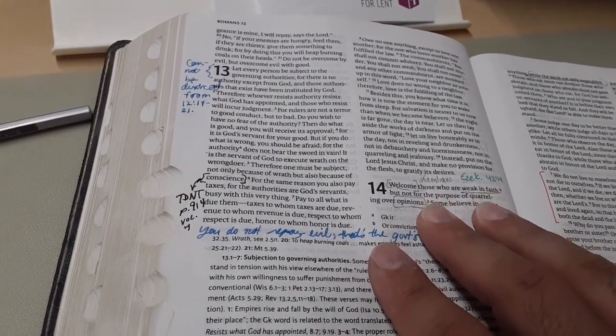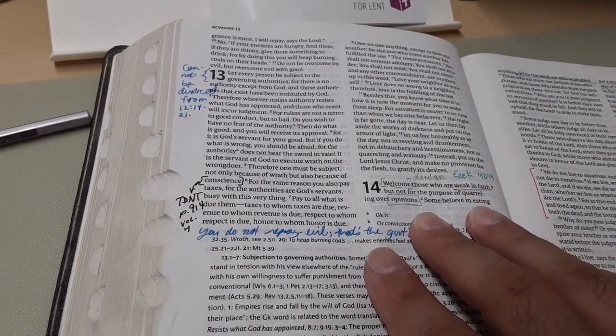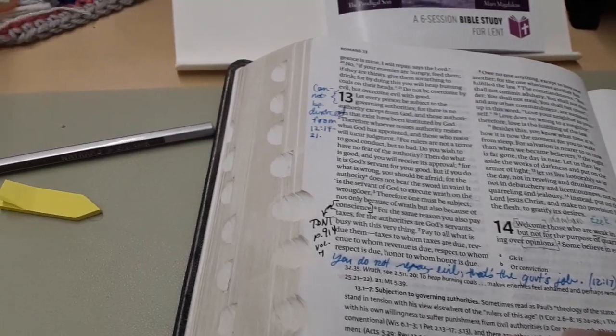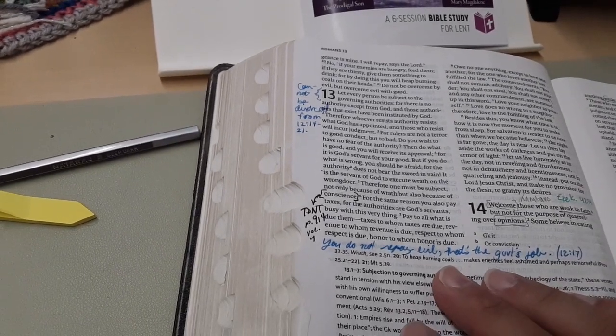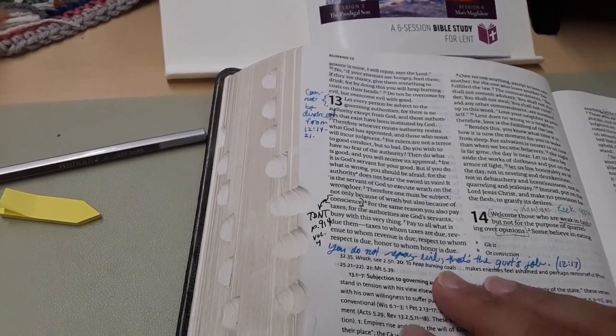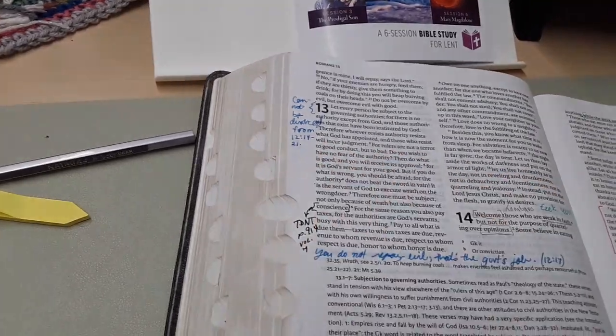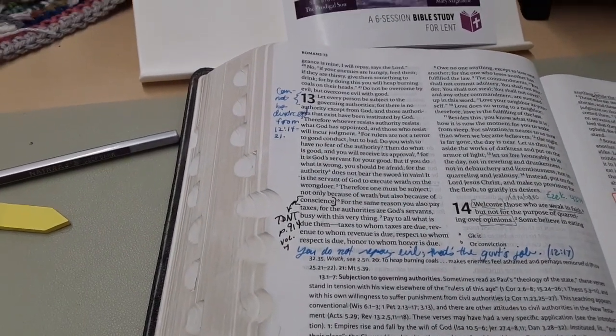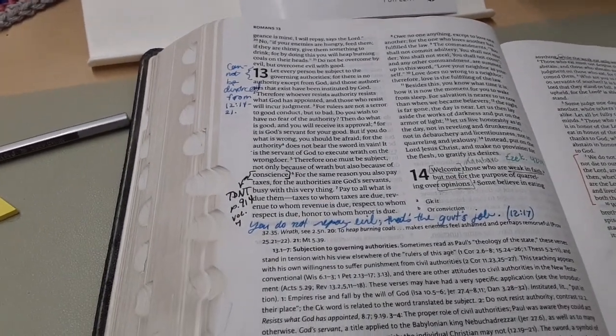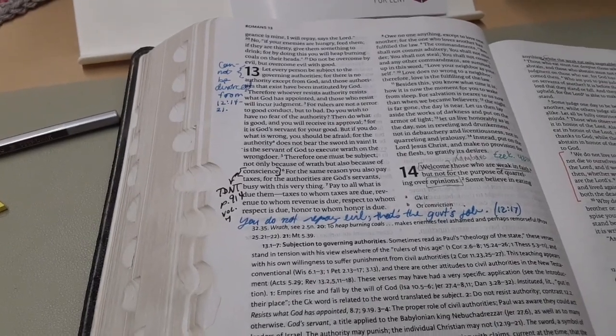I have a note here, Ezekiel 42 to 14. I don't know why, but here's blue. Do not repay evil. That's the government's job. Cannot be divorced from 12:14. So I might've done that for discipleship or some wisdom or something. It could have probably just been done in black.